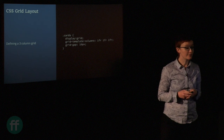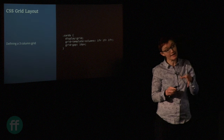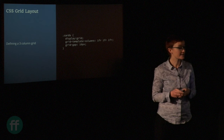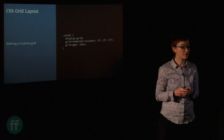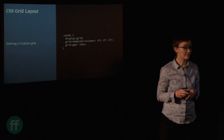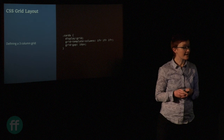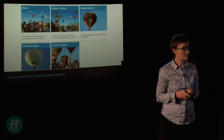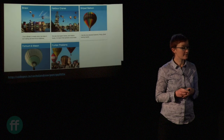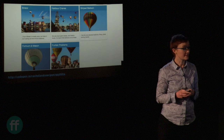When we declare something to be a grid, all the child items — the direct children of that wrapper element — become grid items, same as with flexbox. Here I'm creating a three-column grid using one fraction unit, one fraction unit, one fraction unit. We've got grid-gap to make a gutter between items, and any child elements lay out on the grid, one in each cell.